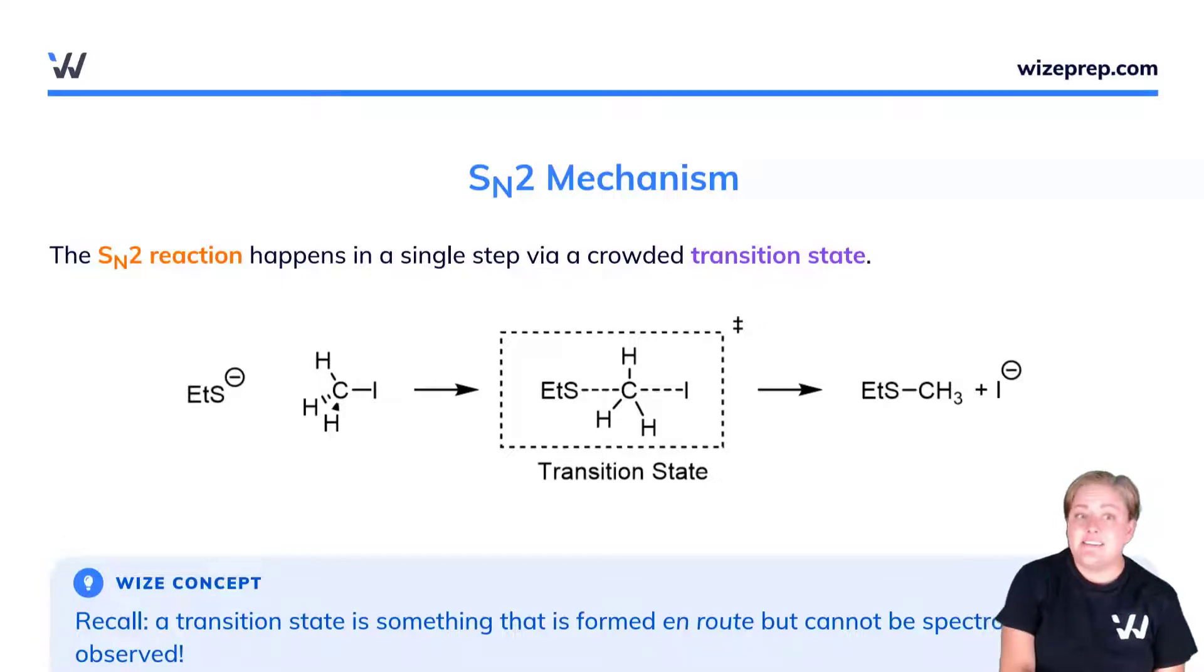Now we'll look at the mechanism for the SN2 reaction. The SN2 reaction happens in a single step via a crowded transition state. Remember, a transition state is something that's formed en route but we cannot spectroscopically observe. It's a proposed structure based on where we start and where we end.